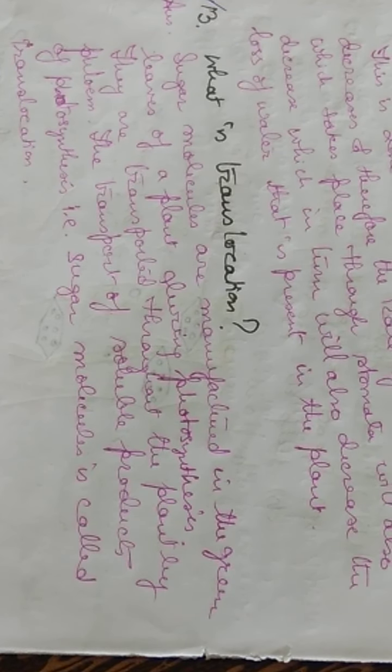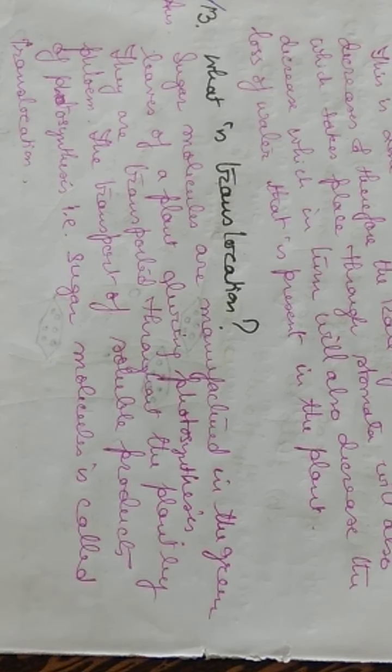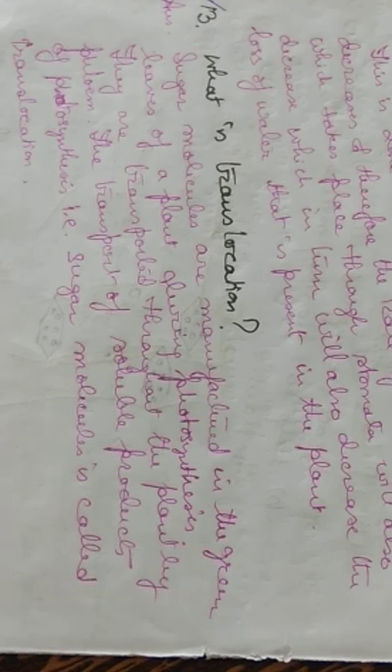What is translocation? Sugar molecules are manufactured in the green leaves of the plant during photosynthesis. They need to be transported to the other parts of the plant. The transport of these soluble products of photosynthesis, that is the sugar molecules, is known as translocation.